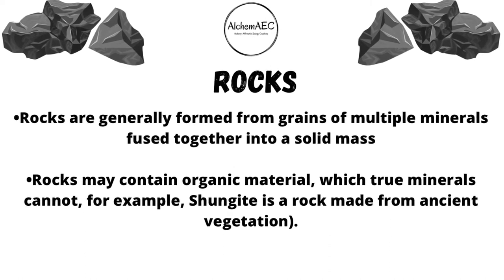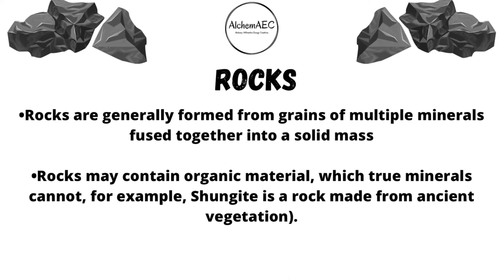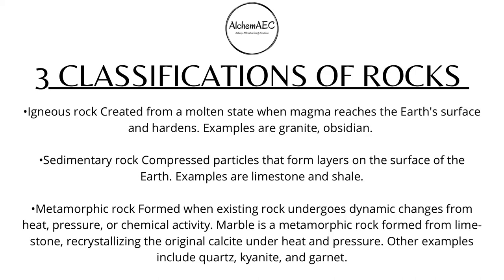Now let's talk about rocks. Rocks are generally formed from grains of multiple minerals fused together into a solid mass. Rocks may contain organic material, which true minerals cannot. For example, shungite is a rock made from ancient vegetation. There are actually three rock classifications: igneous rock, sedimentary rock, and metamorphic rock. An example of an igneous rock is granite or obsidian. Sedimentary rocks are limestone and shell, and metamorphic rocks are quartz, kyanite, and garnet.